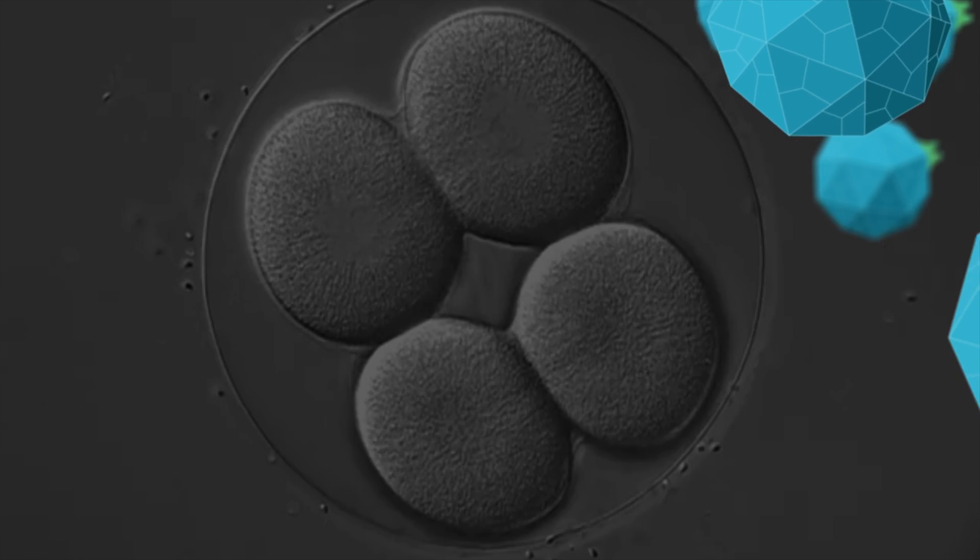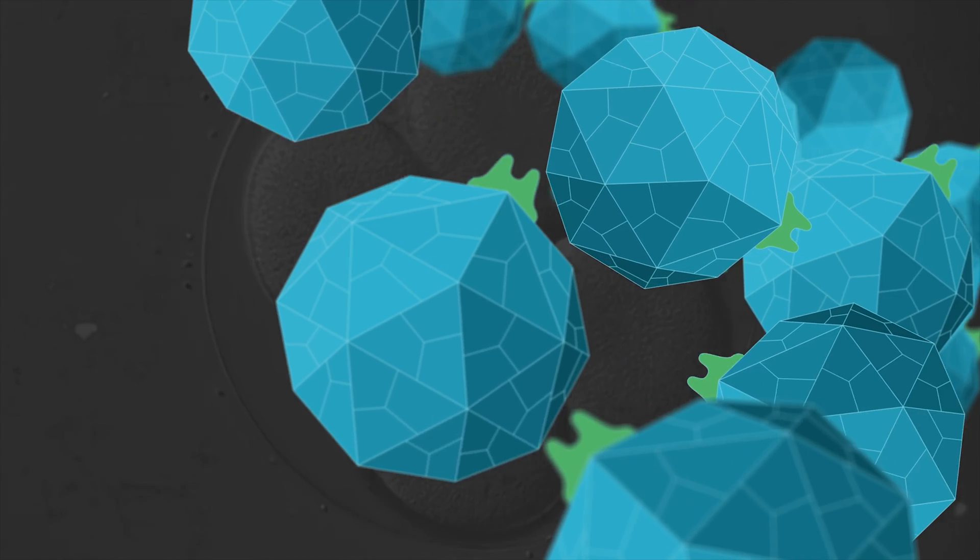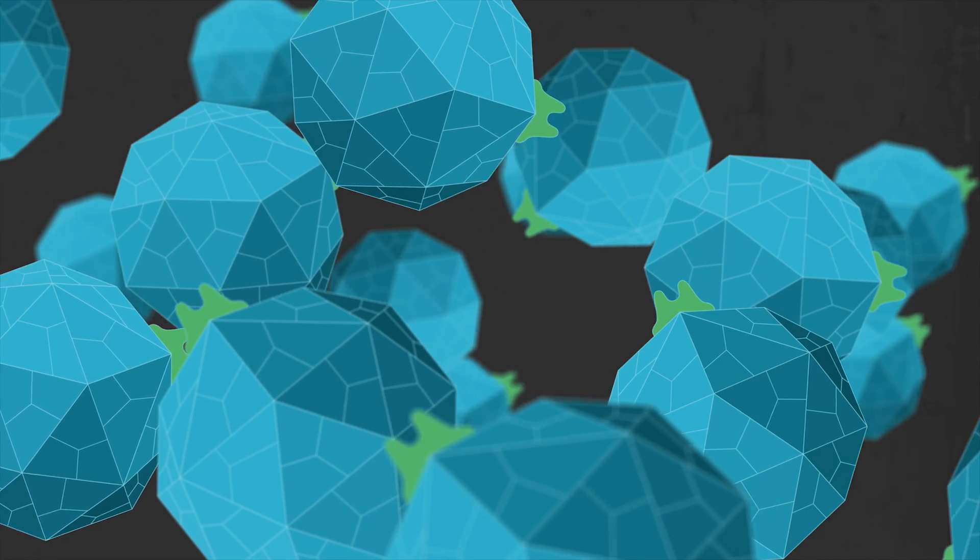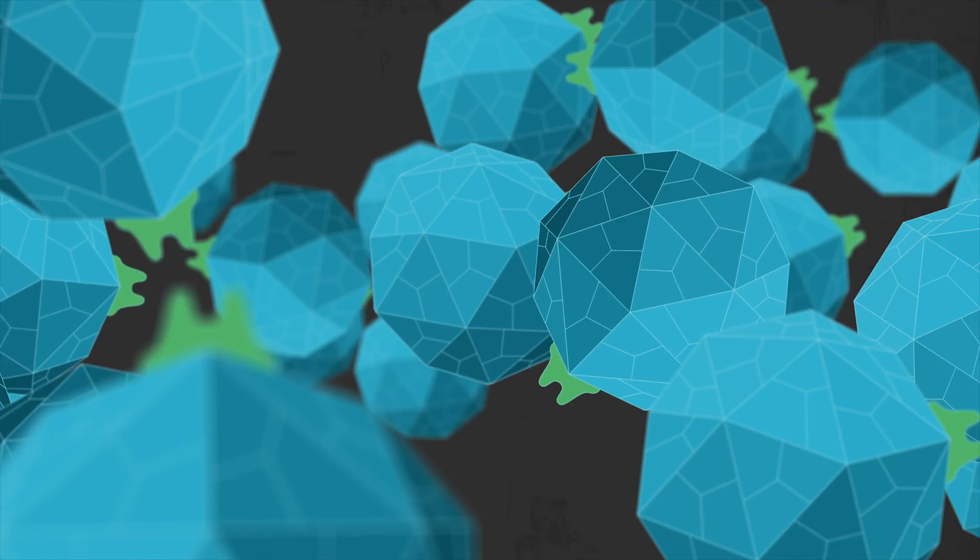Some viruses, like the bacteriophage used by Spiegelman, have their genome in RNA form, and they infect cells to replicate that. In any case, information is passed on to the next generation by replication.